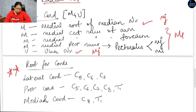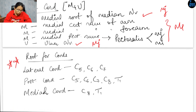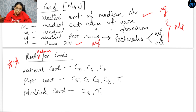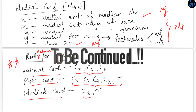Now let's see the root values of the cords — these are very important from the MCQ point of view, so you have to memorize these values. The lateral cord root value is C5, C6, C7. For the posterior cord, it is C5, C6, C7, C8, and T1. For the medial cord, it is C8 and T1.